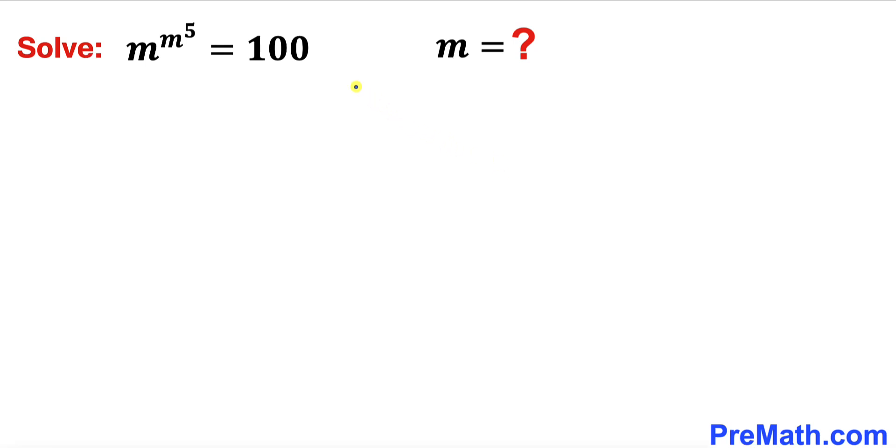Welcome to PreMath. In this video we are going to solve this given nested exponential equation as you can see over here: m to the power of m to the power of 5 equals 100. In other words, we are going to solve for m.